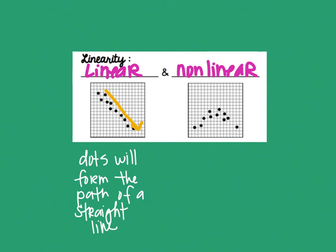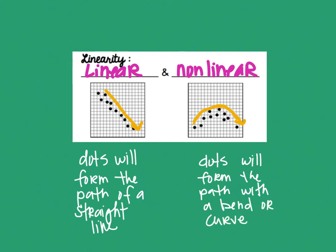However, if you were to trace the path of this second graph that's non-linear, you can tell that it has a bend in it or a curve. So on this side, dots will form the path with a bend or a curve. Or it could just be totally random because totally random would also mean non-linear.